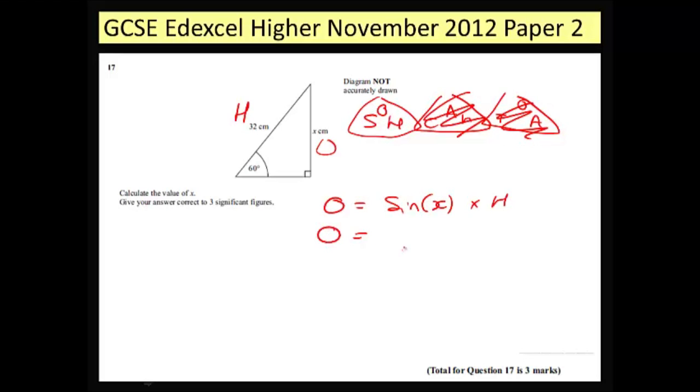That means that the opposite is equal to sine 60 times by 32, and that gives me a value for the opposite, or as they've labeled it, x, as 27.712 and a few things afterwards. And again, this is another one of those questions where they want the answers to three significant figures.